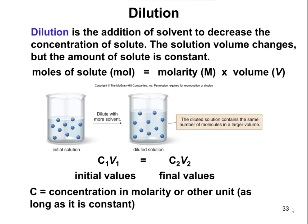In chemistry, when we talk about dilution, the technical way of phrasing this is to say that we're going to add more solvent. Usually the solvent is going to be water, and that decreases the concentration of the solute. Looking at the picture here, here's your initial solution and here's your diluted one. Notice that the volume increases, but you keep the same number of particles.